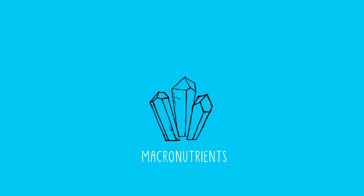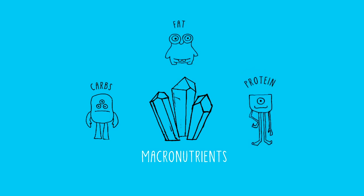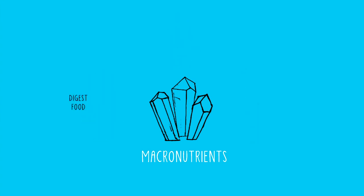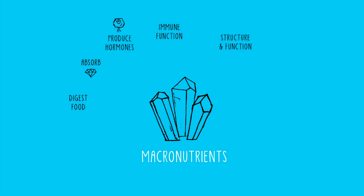Today we're going to be discussing macronutrients — more specifically carbohydrates, fats, and proteins — which means we're now getting into the bulk of the food your clients consume. Macronutrients influence our ability to digest food, absorb nutrients, produce hormones, and they impact our immune function, cell structure and function, our body composition, and metabolic function. We'll learn about how carbohydrates, fats, and proteins play a role in each of these processes.